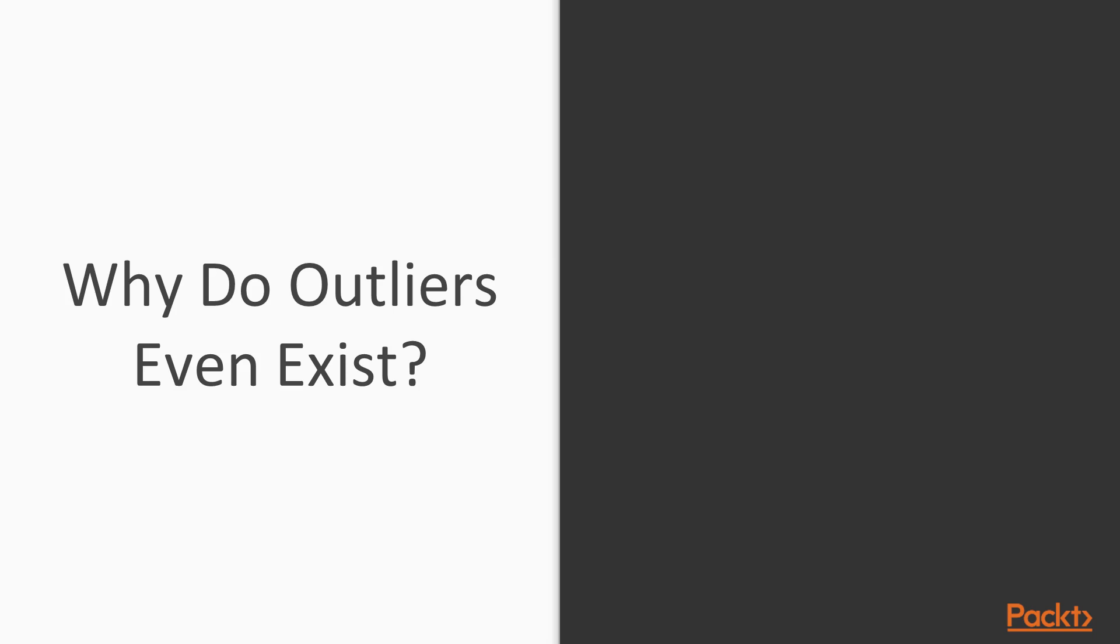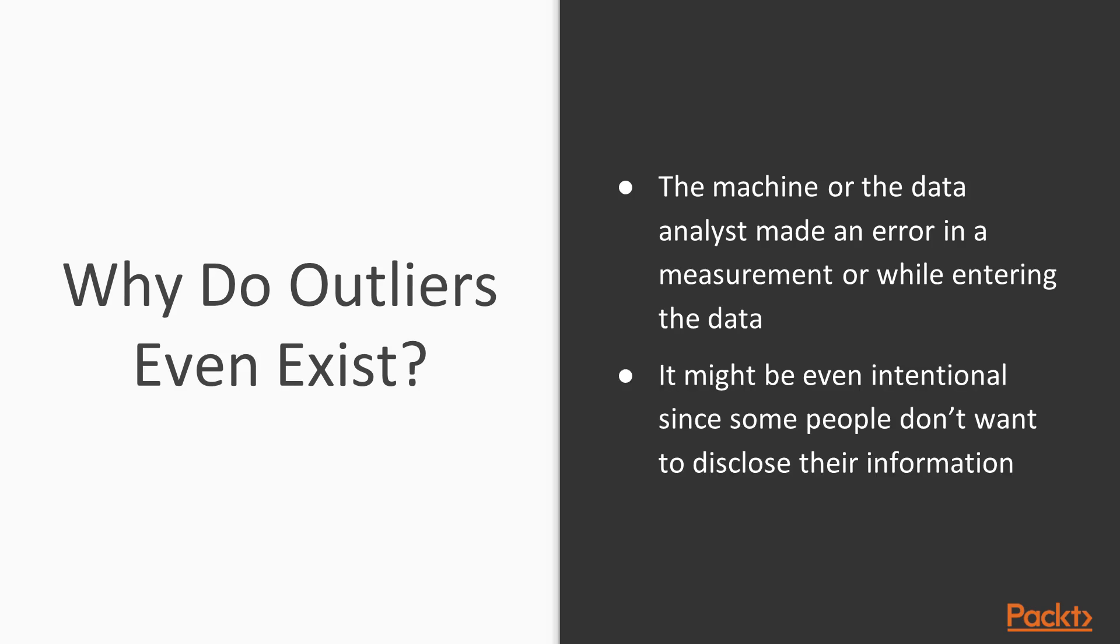So let's see why do outliers even exist? There are too many reasons for that. It might be that the machine or the data analyst made an error in the measurements or while entering the data. It might also be intentional since some people really don't want to disclose their real information. So they can easily intentionally produce outliers by entering wrong data.